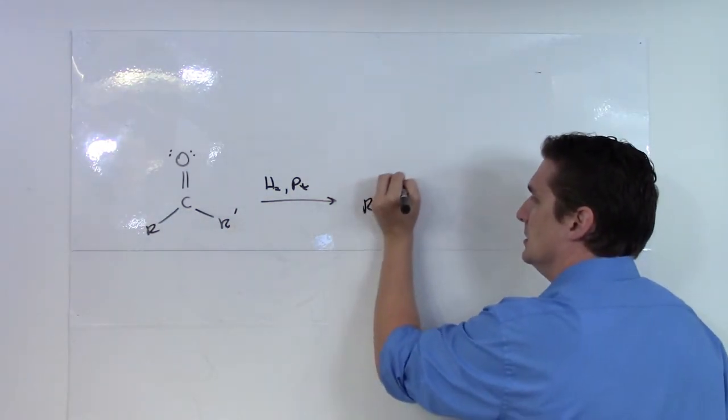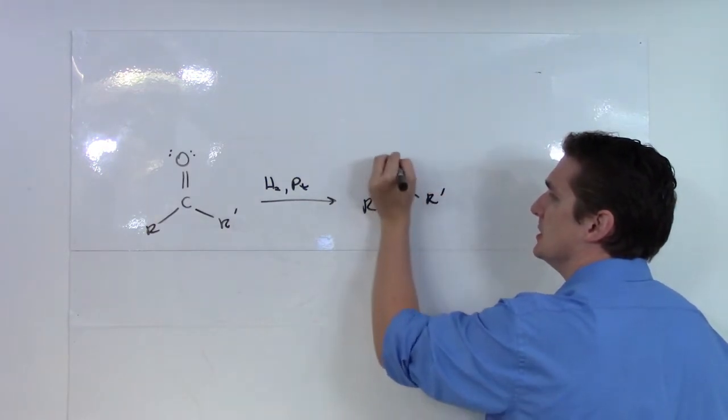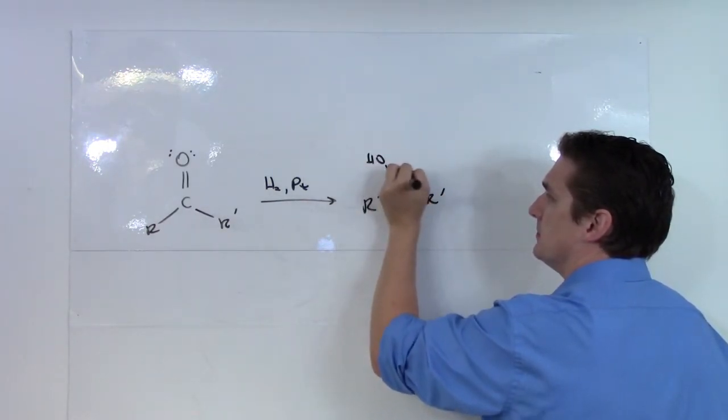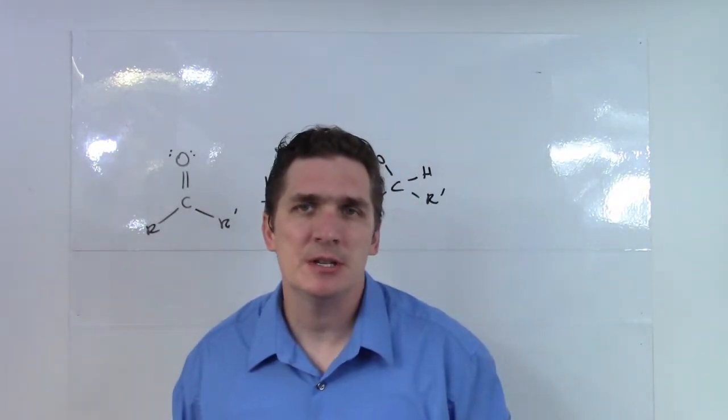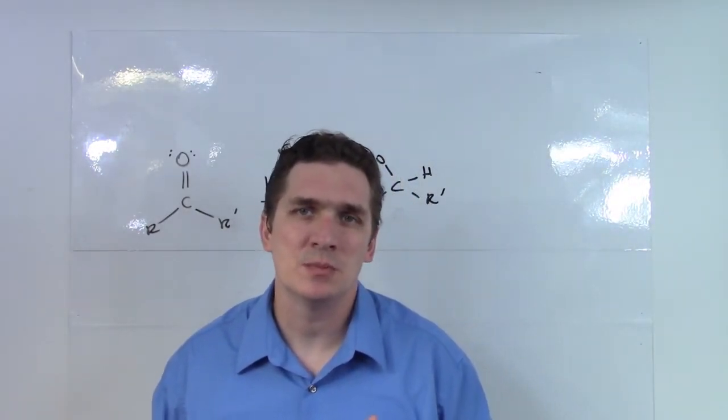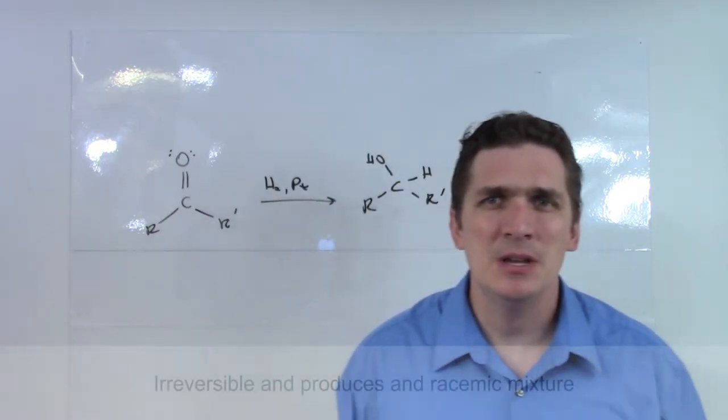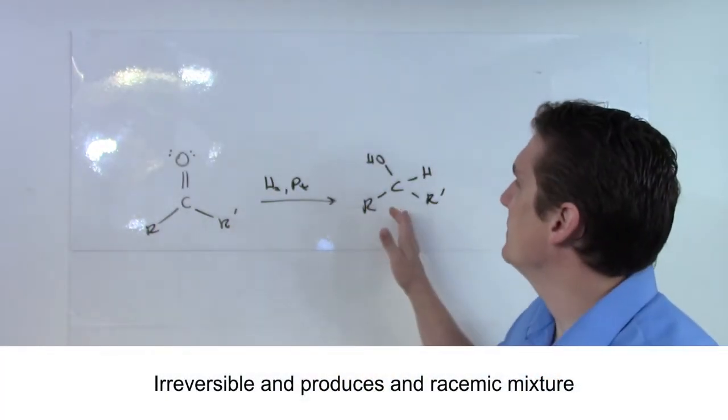What we're going to end up getting when we run this reaction is a pretty much racemic mixture. I say pretty much because you can kind of force it if one of the R groups is bulkier than the other, but generally speaking, we're going to end up with a racemic mixture of alcohols.